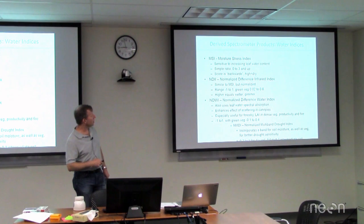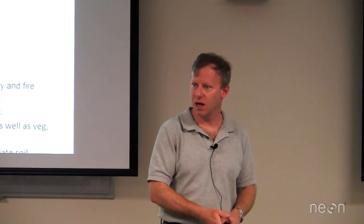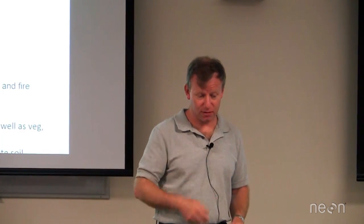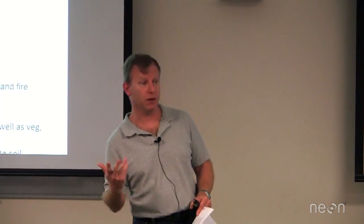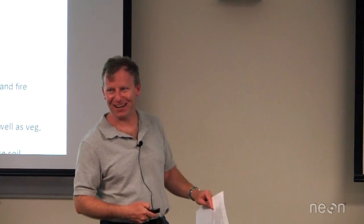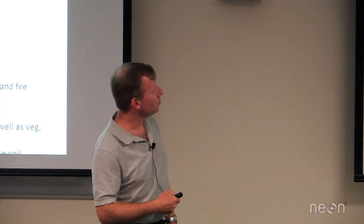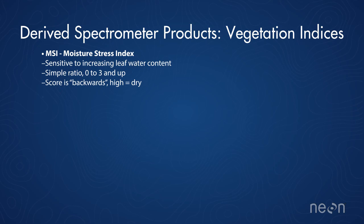The water indices are kind of the next piece. It's nice that it's green, but if it's dry, it's going to be dead soon. So when we talk about canopy water, there's really a family of indices in there. There's the Moisture Stress Index — it says it's green now, but it's stressed out and it's going to wilt off soon. It's a simple ratio, one band over the other, ranging from zero to three. The main thing to highlight though is it's backwards: high equals dry on this one.